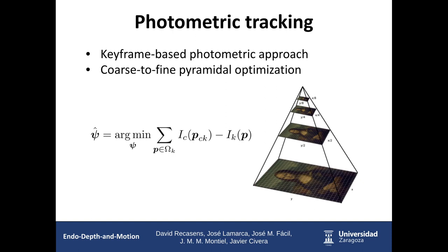In this work we use a photometric approach based on keyframes to track the camera position, which estimates a relative transformation between a keyframe and a target frame. Given the depth map of the keyframe with EndoDepth, we look for the transformation that minimizes the sum of reprojection error of all pixels in the key image. To improve the range of convergence, we use a coarse-to-fine pyramidal optimization: we first optimize only the rotation using the highest pyramid level, giving robustness to motion blur and helping convergence even when motion is not pure rotation. For each lower scale, we optimize the full camera pose using all 6 degrees of freedom.